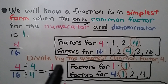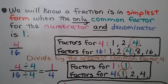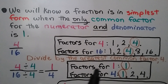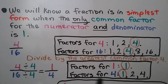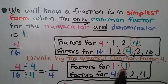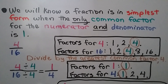Four divided by four is one. Sixteen divided by four is four. We have one-fourth. We can make sure that it's in its simplest form by writing the factors for one, which is just one times one, and the factors for four: one, two, and four. The only common factor they have is one, so yes, it's in its simplest form.